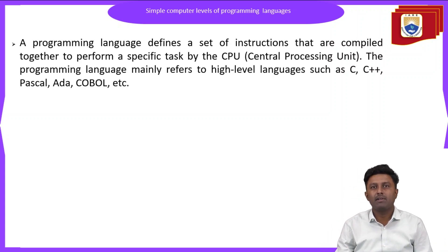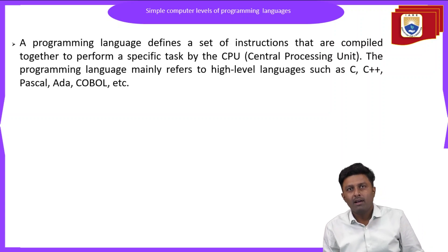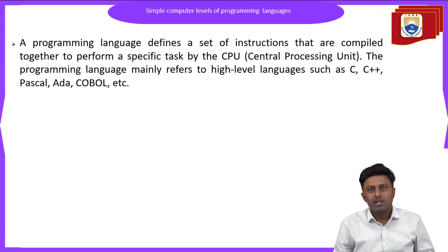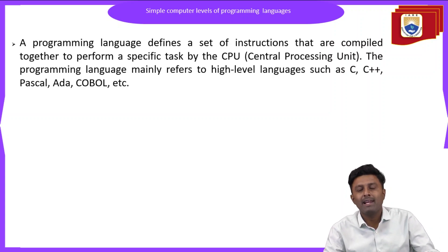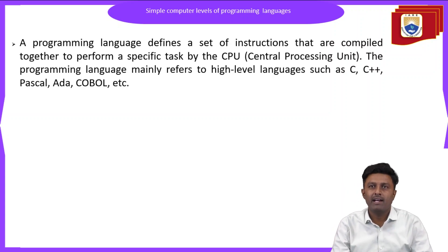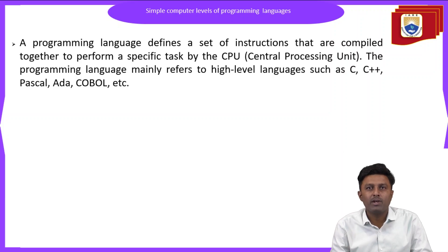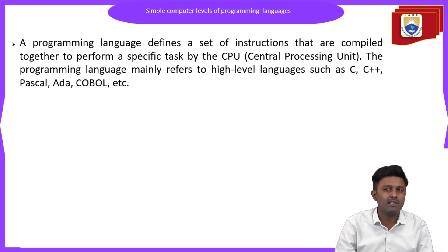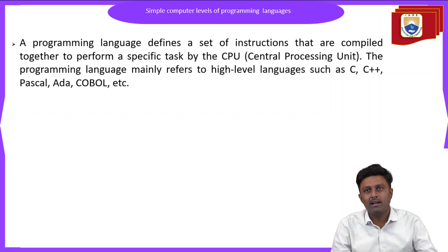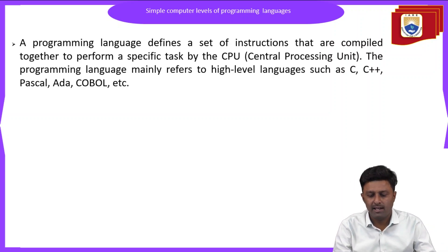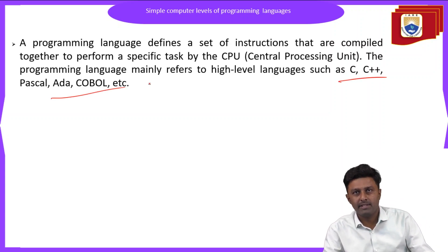That is, what are the different types of programming languages available in computer architecture? First, we will see what is a programming language. A programming language defines a set of instructions that are compiled together to perform a specific task by the CPU, that is the central processing unit. Some of the high level programming languages you can see are C, C++, Python, and other languages.